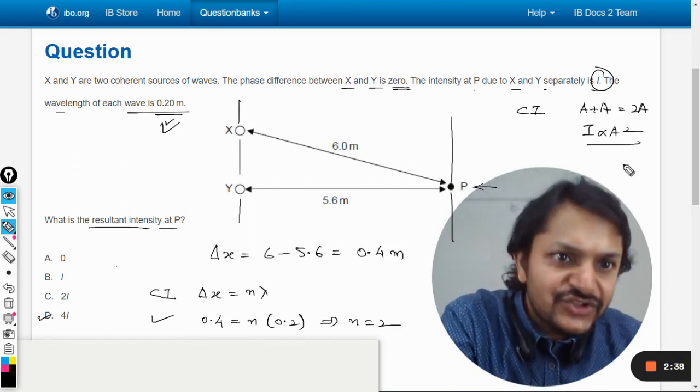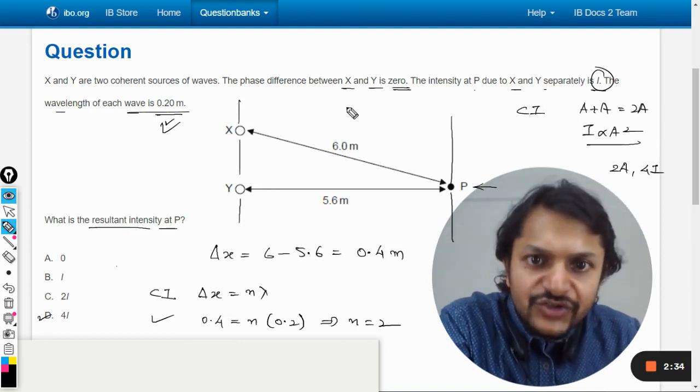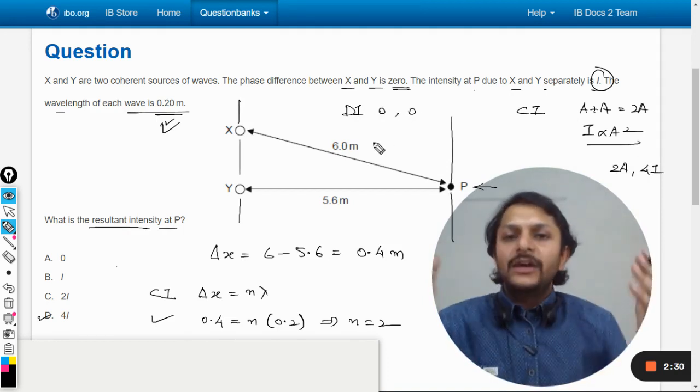So either the amplitude or the intensity will be 0 or it will be 2a and 4I. In constructive interference the amplitude will be 2a, intensity will be 4I. In destructive interference the amplitude will be 0, intensity will be 0. Straightforward.